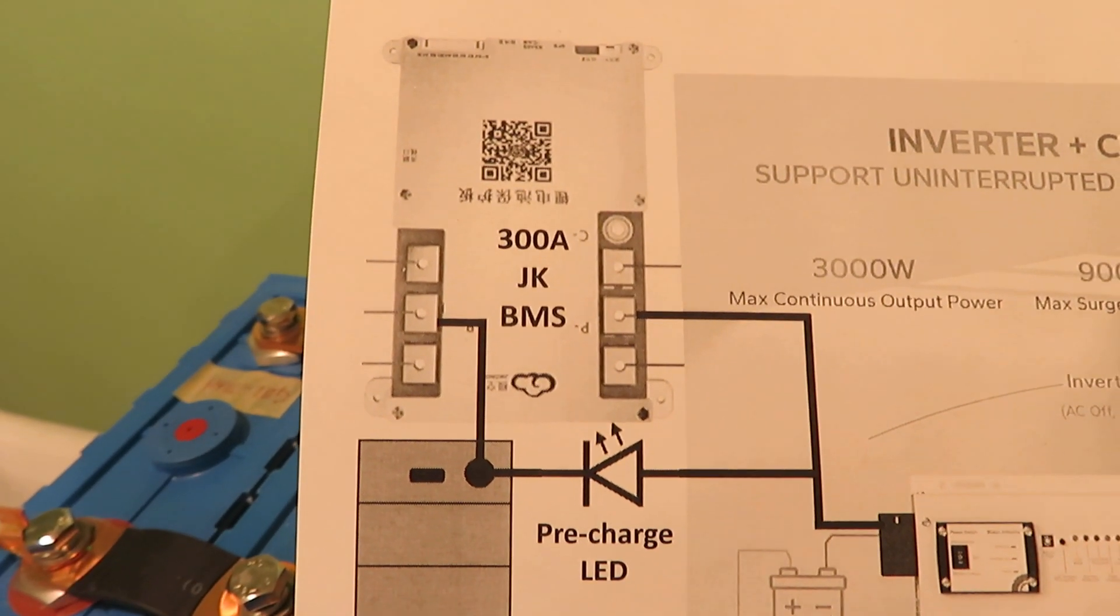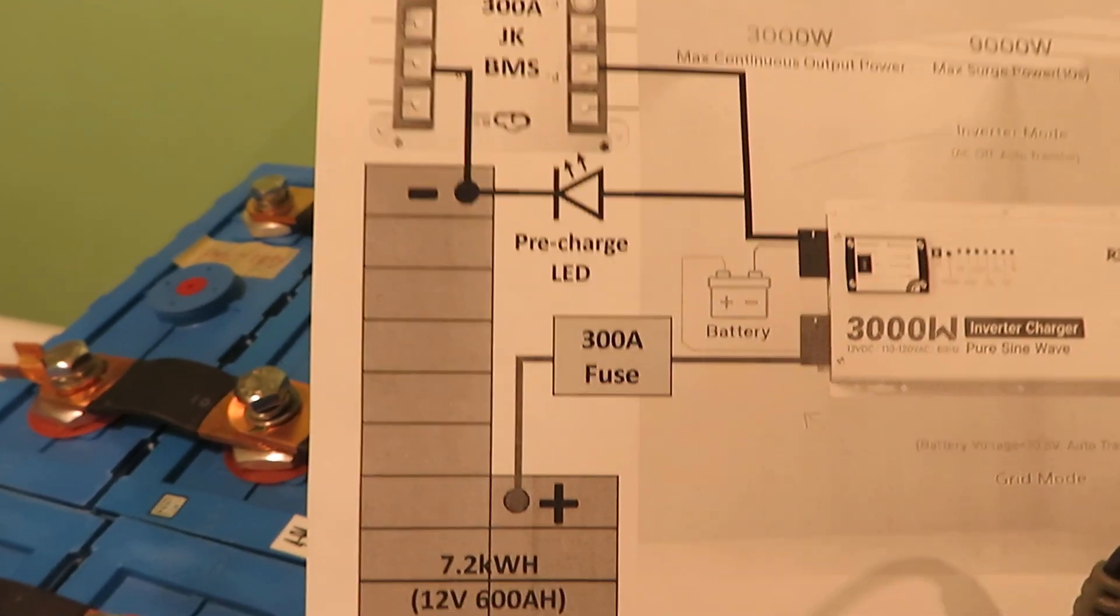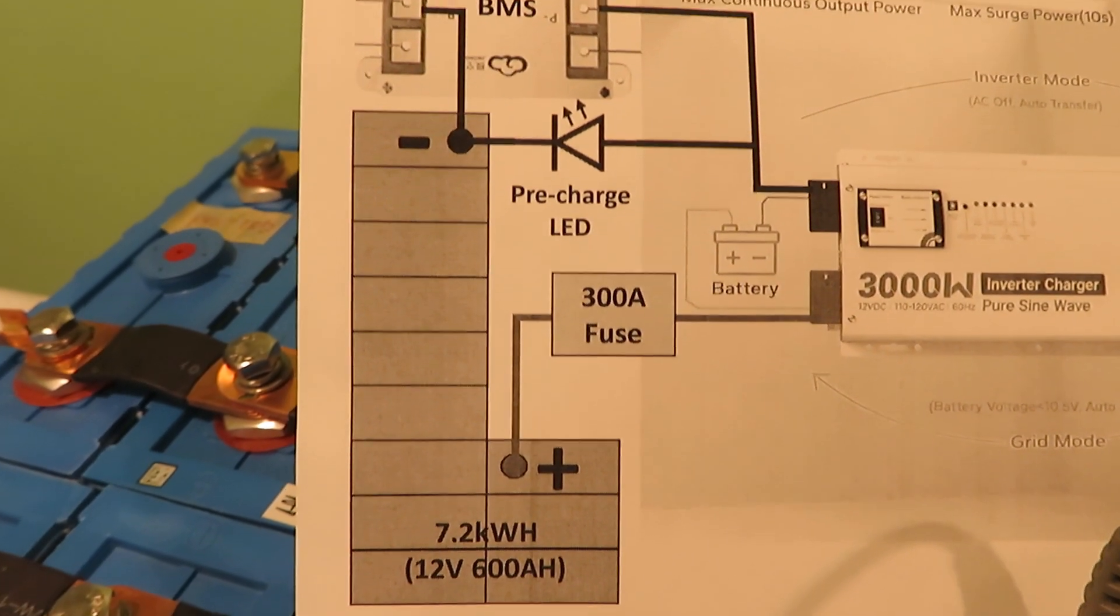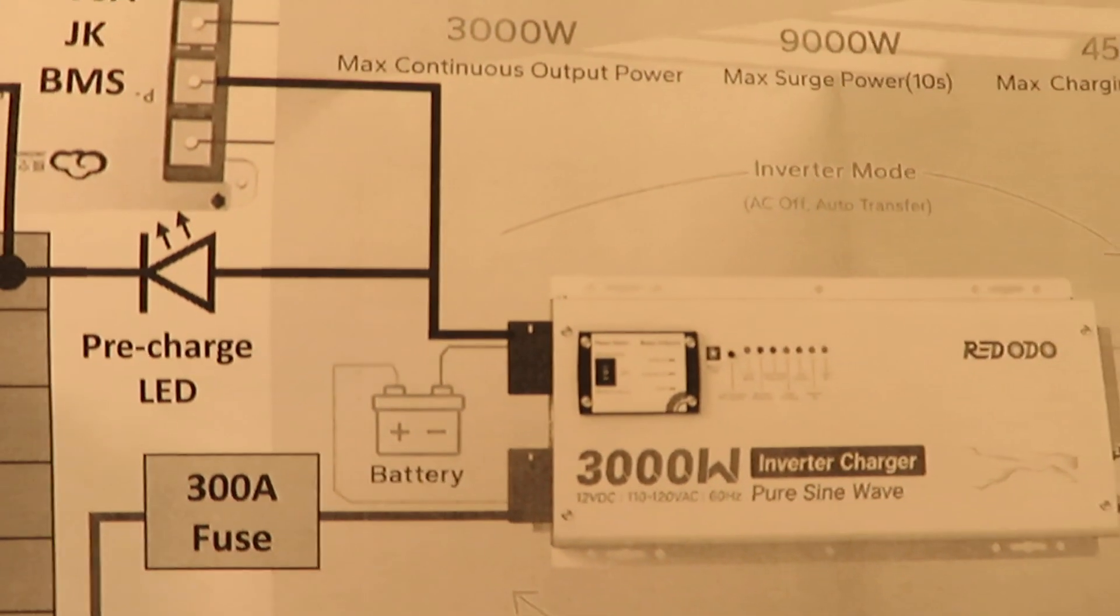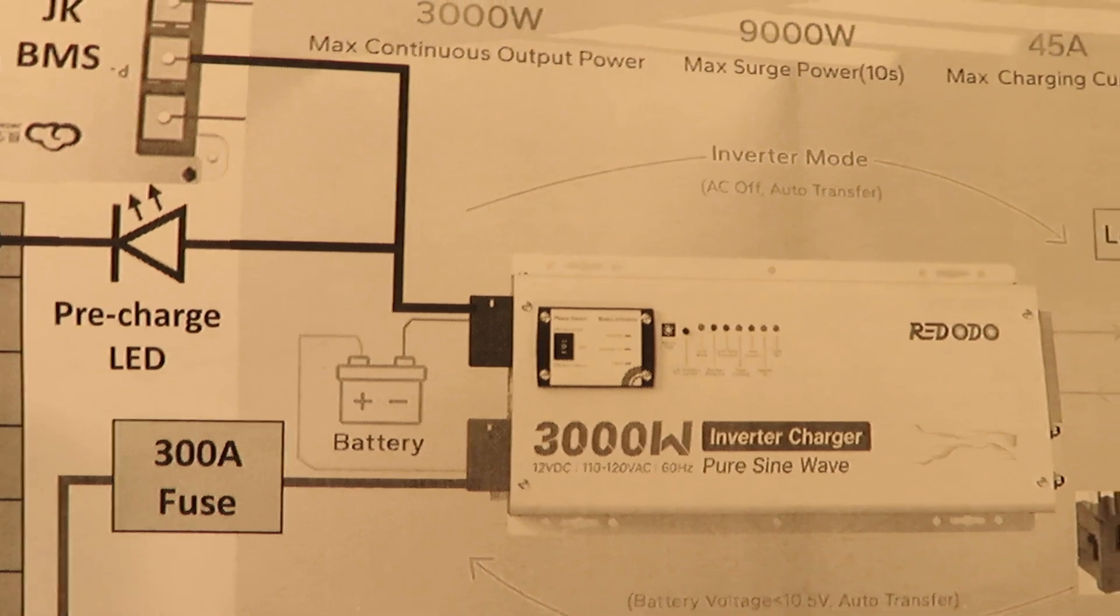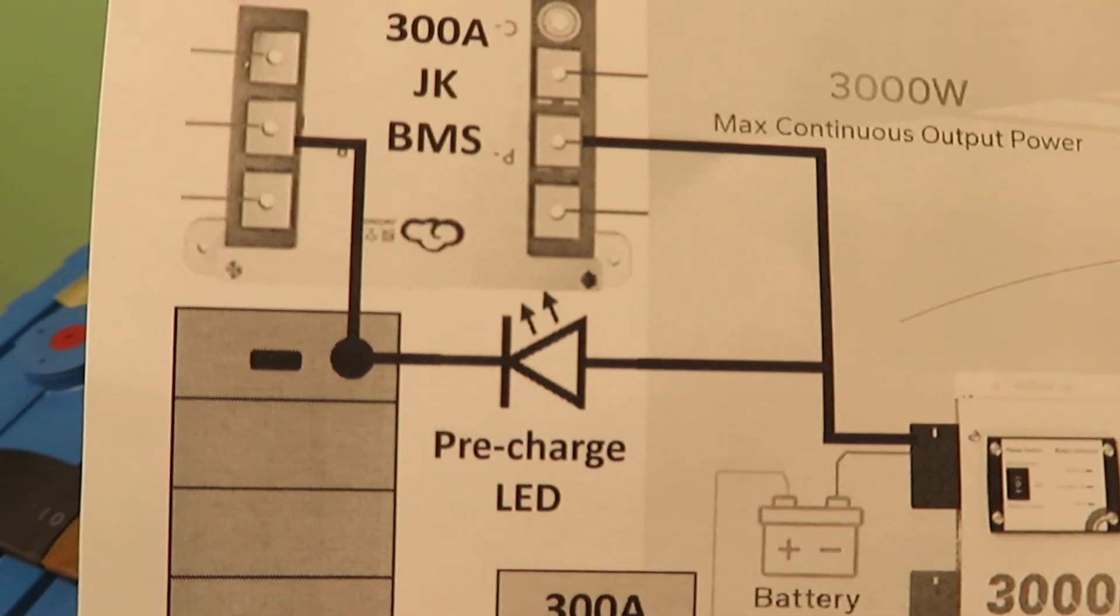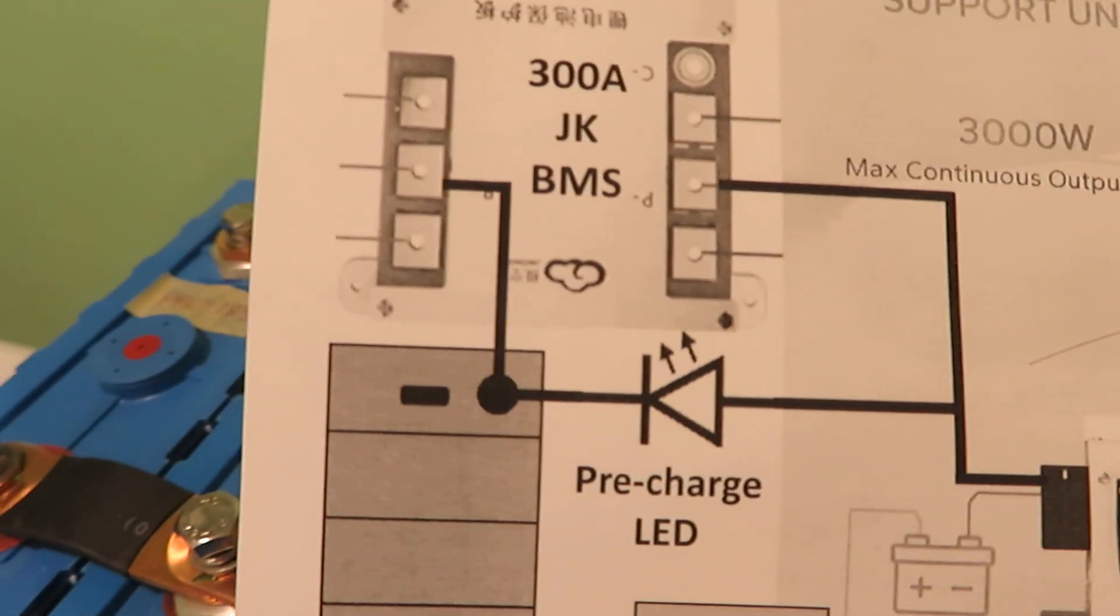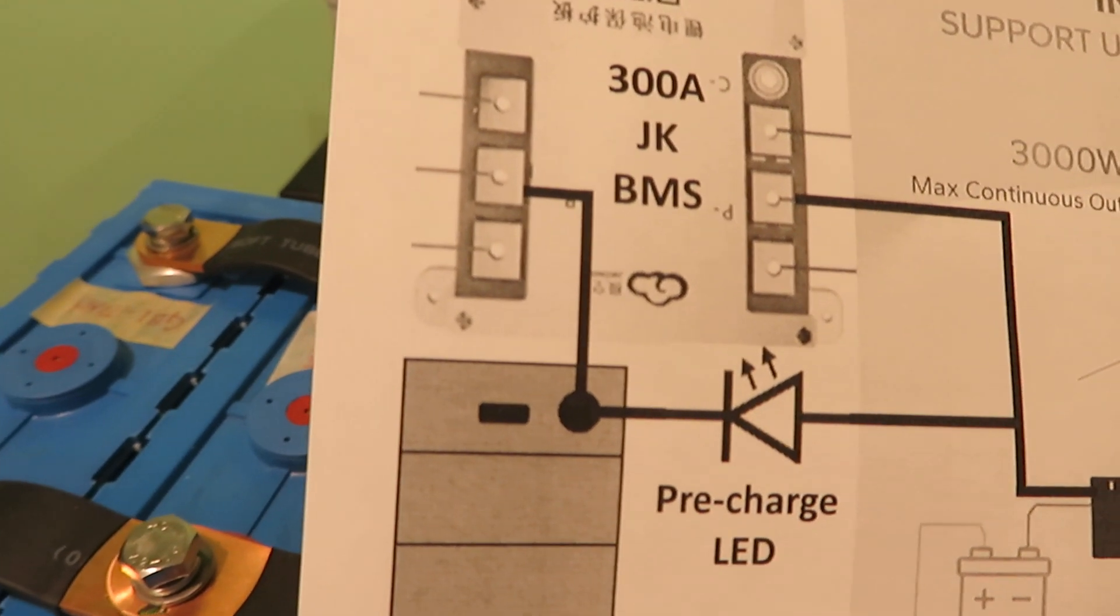The polarity is such that the negative of the inverter goes to the anode, which is the positive of the LED, and then the cathode of the LED, which is negative, goes to the battery negative.